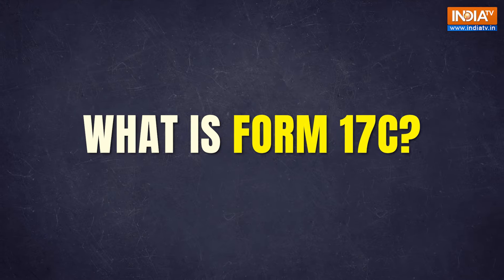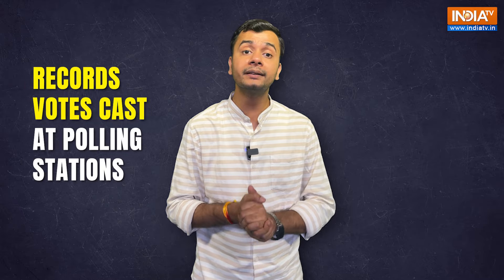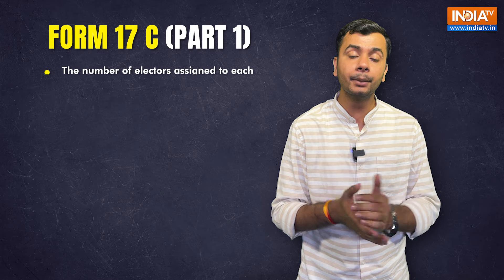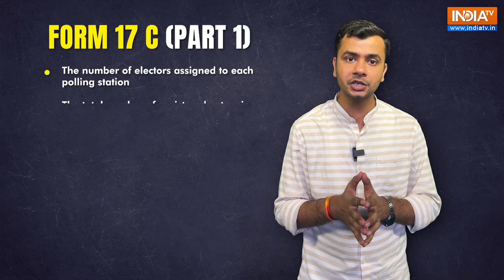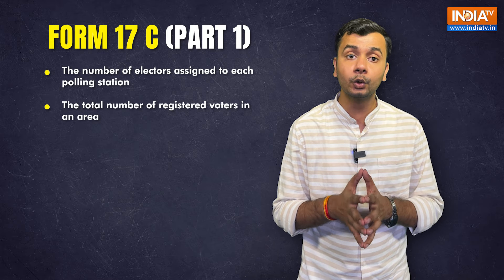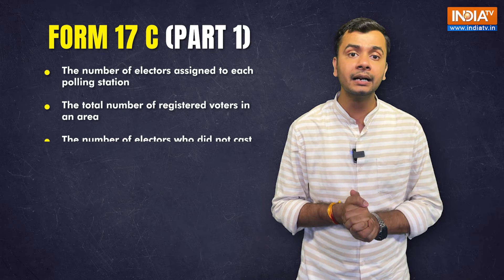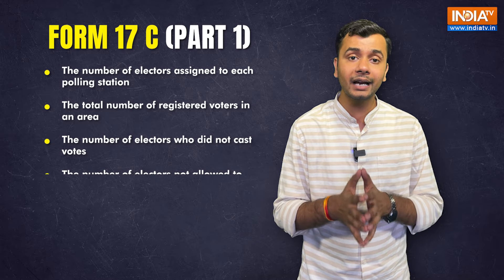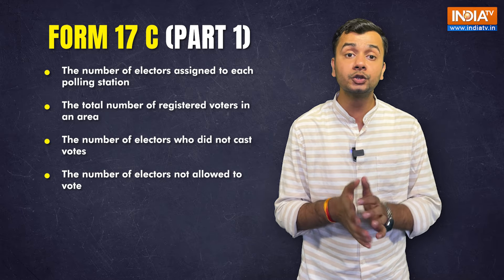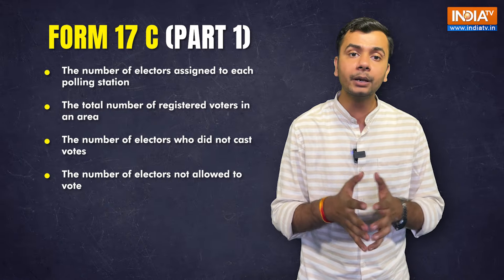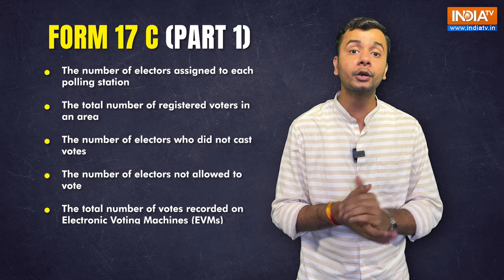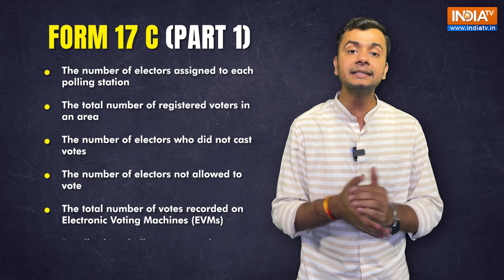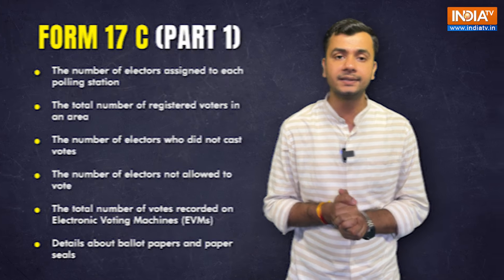What exactly is Form 17c? Form 17c is a crucial document that records votes cast at polling stations across the country. It includes the number of electors assigned to each polling station, the total number of registered voters in an area, the number of electors who did not cast votes, the number of electors not allowed to vote, the total number of votes recorded on electronic voting machines, and details about ballot papers and paper seals.